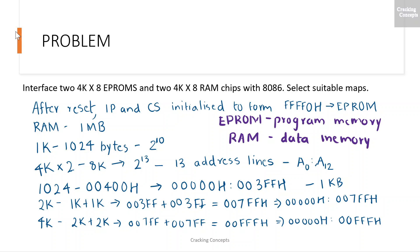Let's move on to the problem. Interface two 4Kx8 EPROMs and two 4Kx8 RAM chips with 8086 using a suitable memory map. As we already know, after a reset the instruction pointer and the code segment register will be initialized to form the address FFFF0H. This address must lie in the EPROM. However, the address for RAM may be selected anywhere in the 1MB address space of 8086, but we should select it in such a way that the memory map is continuous.